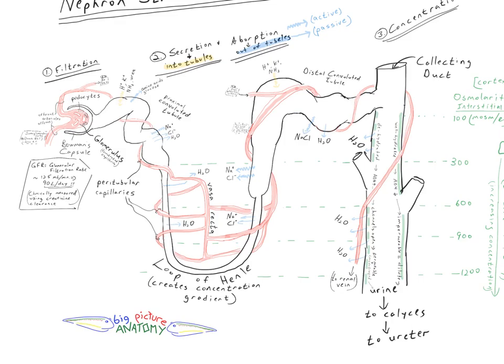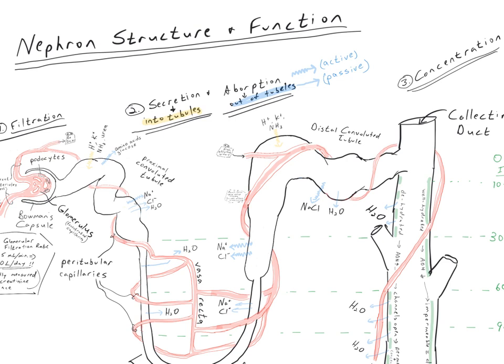This includes both secretion from the surrounding capillaries and interstitial fluid into the tubules of certain substances, and what we call absorption out of the tubules of other substances. The absorption can be passive, meaning it's basically osmosis or diffusion, or it can be active where there are proteins in the membranes pumping these materials out. In the proximal convoluted tubule, we see active absorption out of the tubules of amino acids and glucose, eliminating those from the urine. There is also active secretion of some hydrogen ions, potassium ions, ammonia, and urea into the tubules from the surrounding fluid.